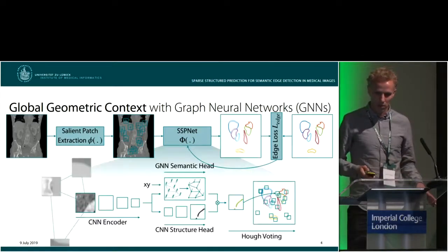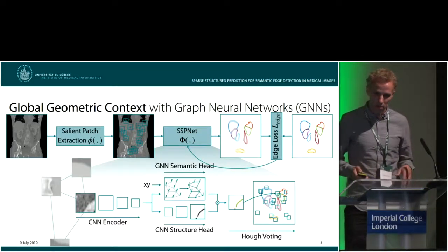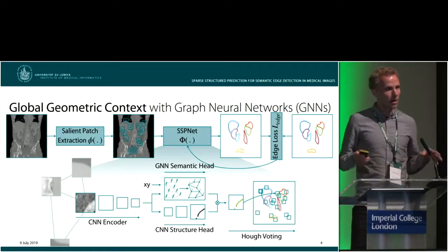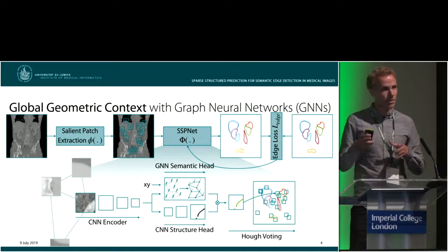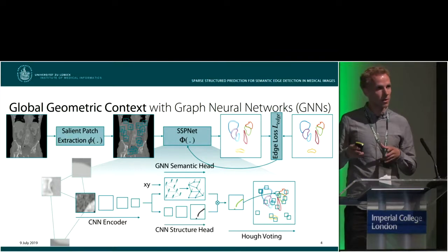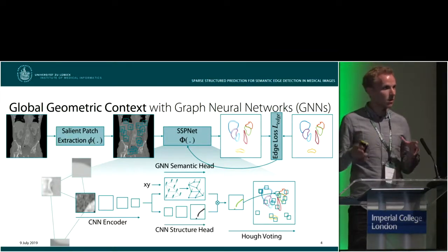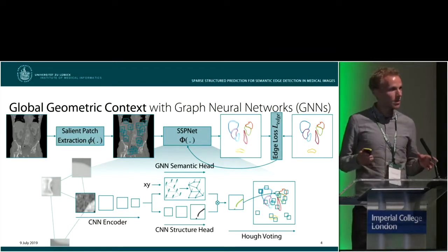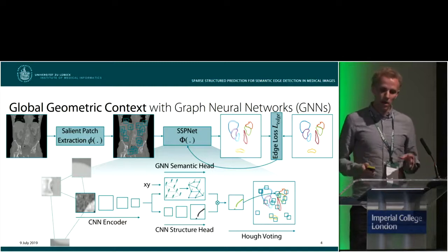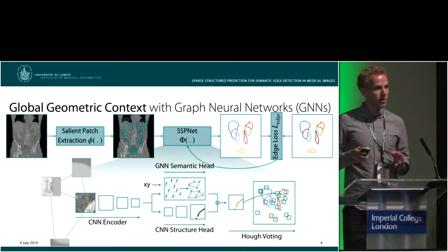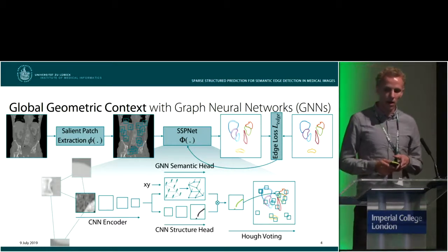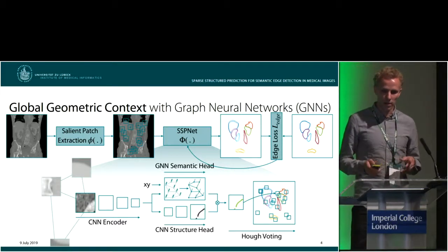Now we have a detailed look at the proposed SSP net. The extracted image patches are represented as node features on a distance graph that connects all sparse key points, and all image patches are processed by the CNN encoder.